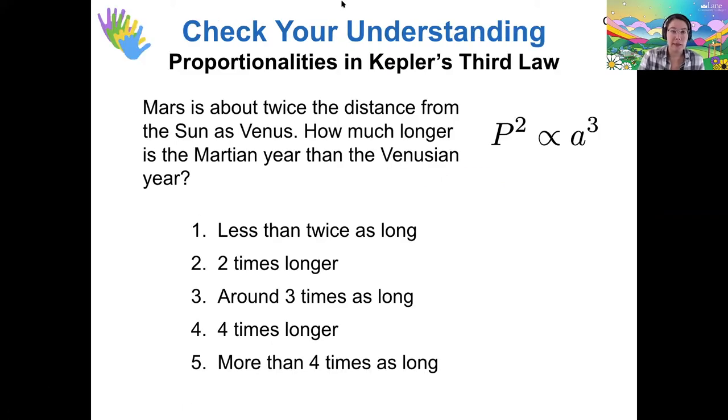Let's say that we have Mars and Venus, and let's say that Mars is about twice the distance from the sun as Venus. Distance from the sun is going to be this semi-major axis variable. So the distance from the sun is about the semi-major axis.